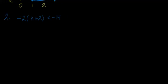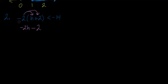Let's try this next example: negative two times the quantity h plus two is less than negative 14. We're going to use the distributive property, multiplying negative two times h to get negative two h, and negative two times positive two gives us negative four. So combined with the signs, that's a subtraction sign, giving us negative two h minus four is less than negative 14.